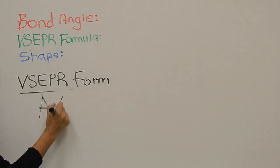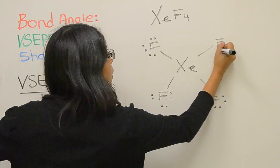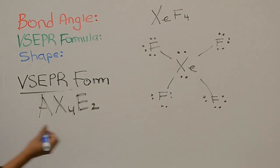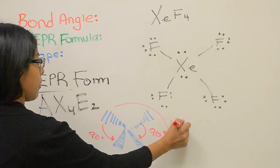And last but not least, we have xenon tetrafluoride, which has the VSEPR formula of AX4E2 with bond angles of 90 degrees and 180 degrees. The shape is a square planar.